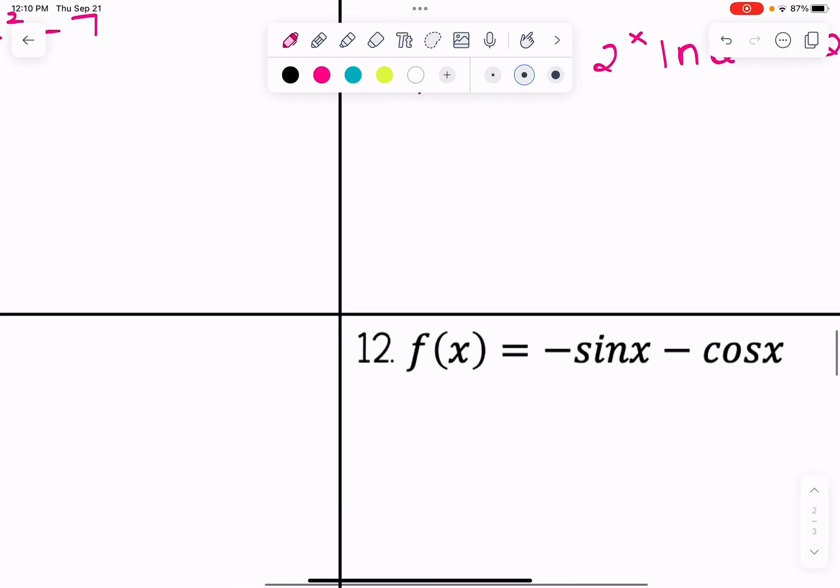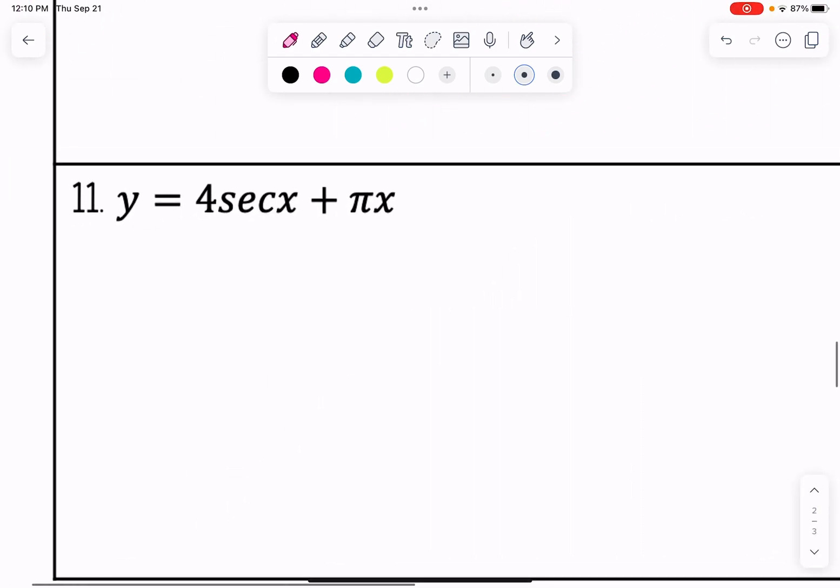All right, just a couple more here. Number 11, the derivative of 4 secant x plus pi x. The derivative of pi x is simply pi. That is our coefficient, and we're just going to copy that over.